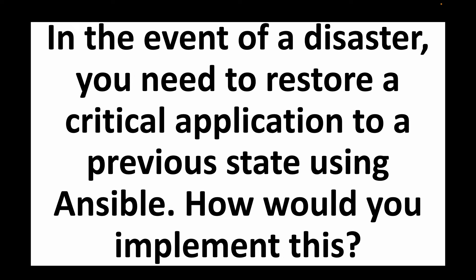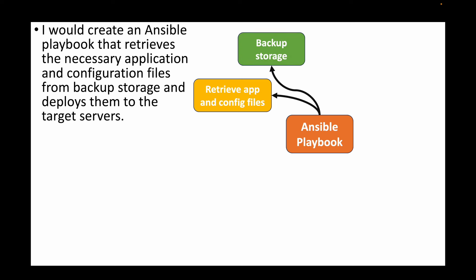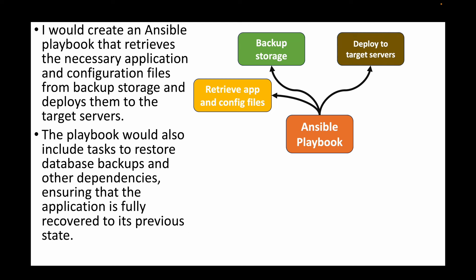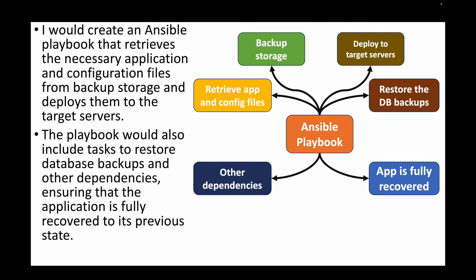The next question: in the event of a disaster, you need to restore a critical application to a previous state using Ansible — how would you implement this? We create an Ansible playbook that retrieves the necessary application and configuration files from the backup store and deploys them back to the target servers. The playbook also includes tasks to restore the database backups and other dependencies, ensuring the application is fully recovered to the previous state — for example, rolling back from version 3.0 to version 2.0.